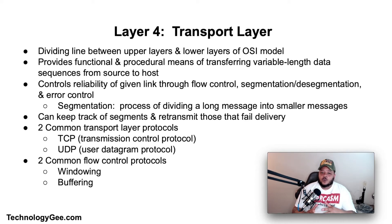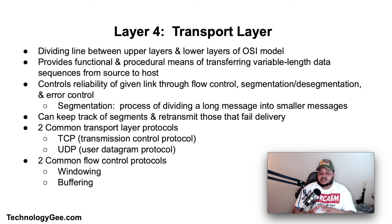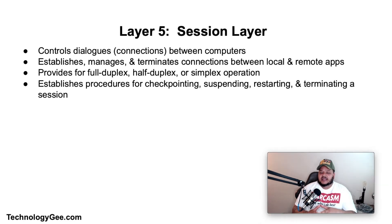Two common flow control protocols are windowing and buffering. With windowing, TCP communication sends one or more segments at a time, and a receiver can attest to the receipt of all the segments in a window with a single acknowledgement. With buffering, a device such as a router uses a chunk of memory — also known as a buffer or queue — to store segments if bandwidth is not available. A queue has finite capacity, however, and can overflow or drop segments in cases of sustained network congestion.